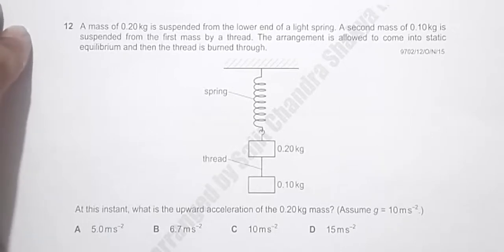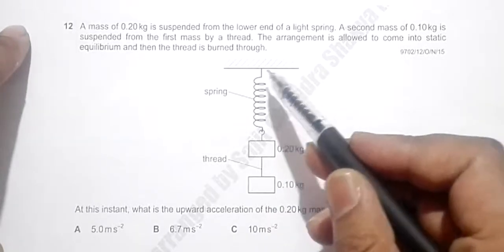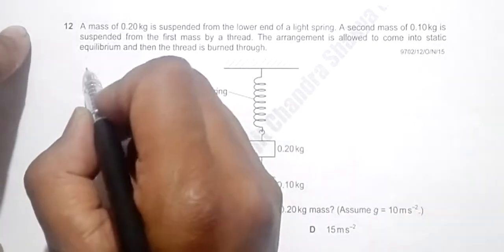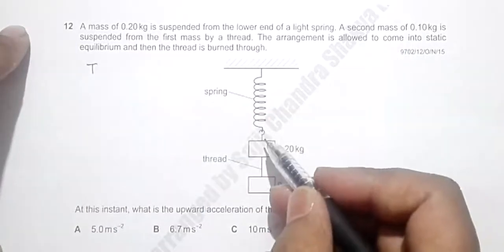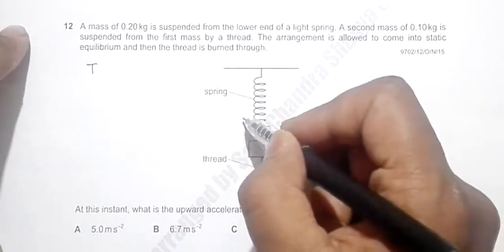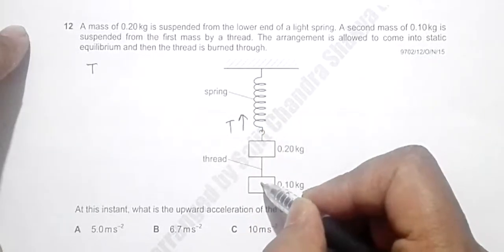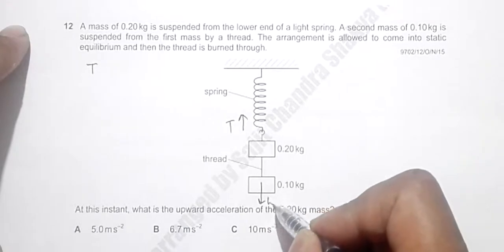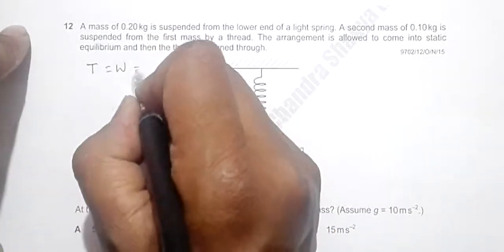Let us say initially we have just suspended this and the system is in equilibrium. At that time, the tension force that develops in the spring, which will be acting in upward direction, will be equal to the combined weight of the system.